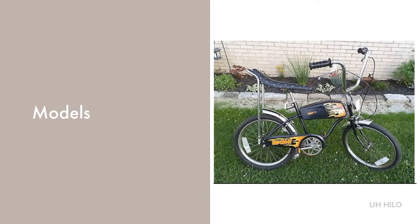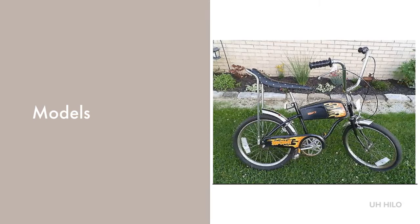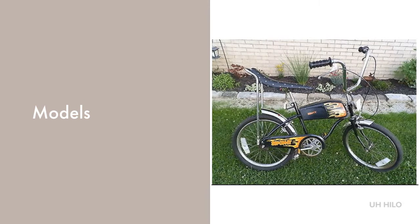Models capture important properties of their real-world counterparts, but they have some notable differences too. First, they tend to differ in scale from the real thing. Think back to a toy car or truck you had as a child — it probably differed in scale from the real thing. My first bike, pictured here, was a model of a motorcycle, but certainly differed in scale from a real motorcycle.